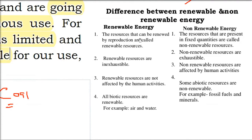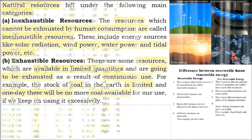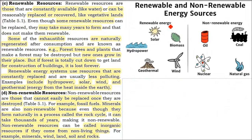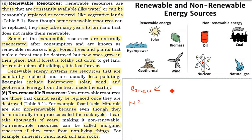We will now talk about non-renewable and renewable energy. There are different categories: renewable resources and non-renewable resources. Renew means it will come again — it can replenish itself. Renewable resources are those which are constantly available, like water. Water in every form will always be there; the total quantity is fixed but it will never be finished.